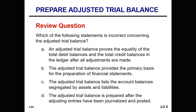Which of these statements is incorrect in regards to the adjusted trial balance? The answer is: the adjusted trial balance lists the account balances segregated by assets and liabilities. This is not true — this is incorrect — because remember, it just shows all your assets, your liabilities, your owner's equities, your revenues, and your expenses.